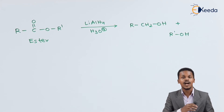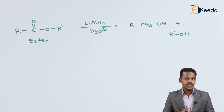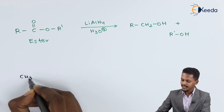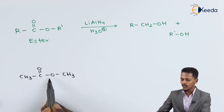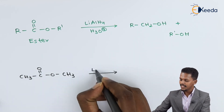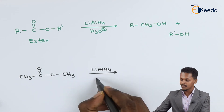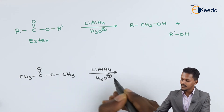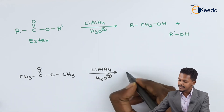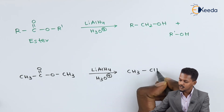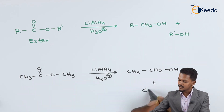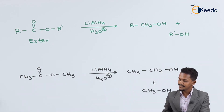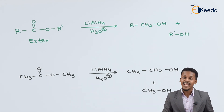For example, if we consider methyl ethanoate, that is CH3-C(=O)-O-CH3, and treat it with lithium aluminum hydride in an acidic condition (H3O+), the product we obtain is CH3CH2OH (ethanol) along with CH3OH. So this is the preparation of alcohols from carboxylic acid and ester.